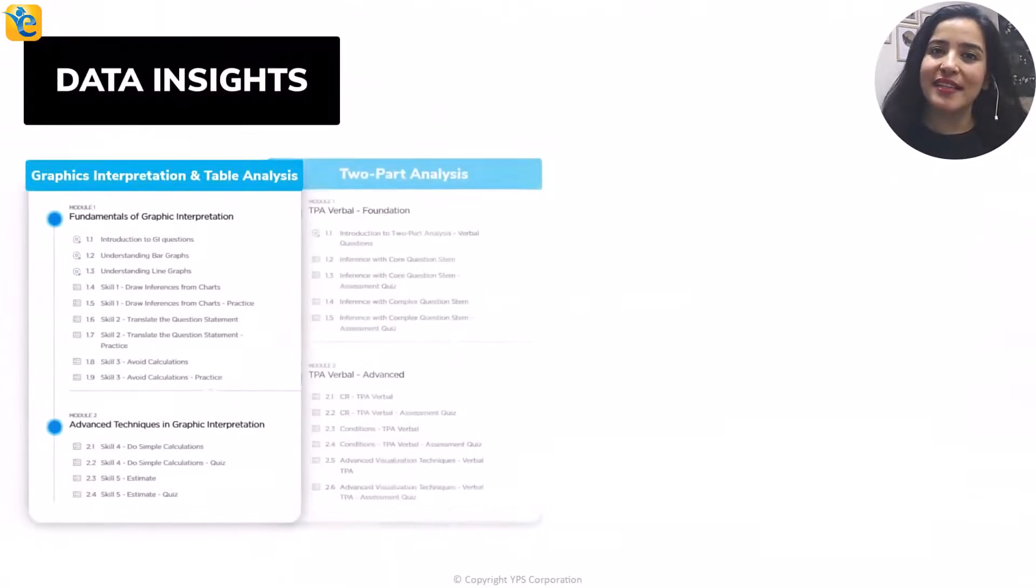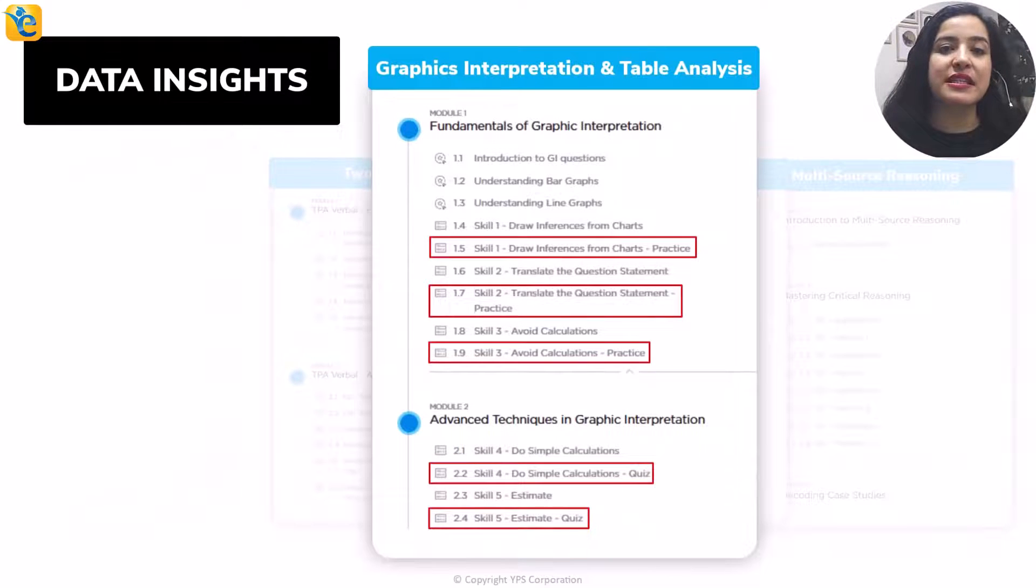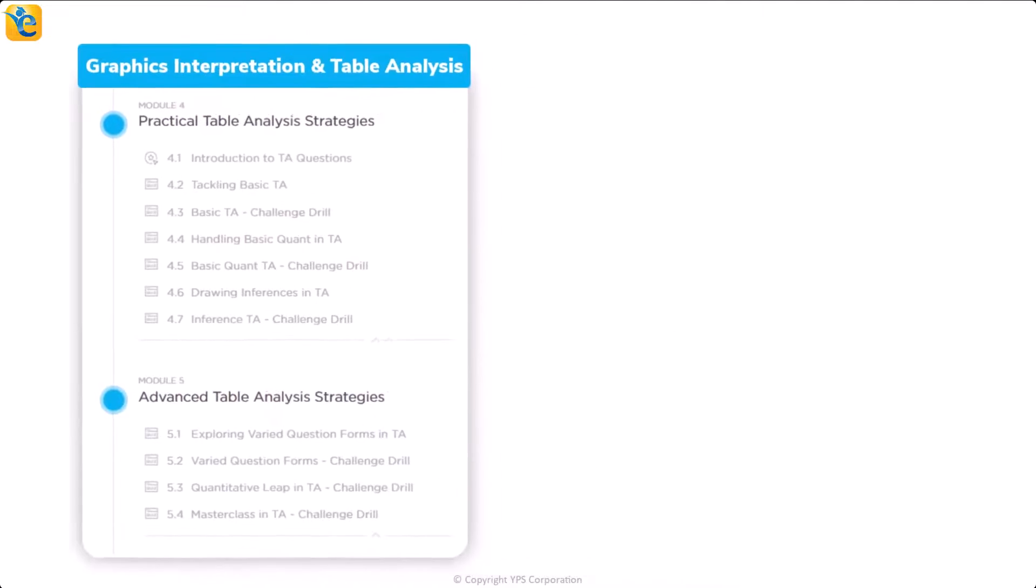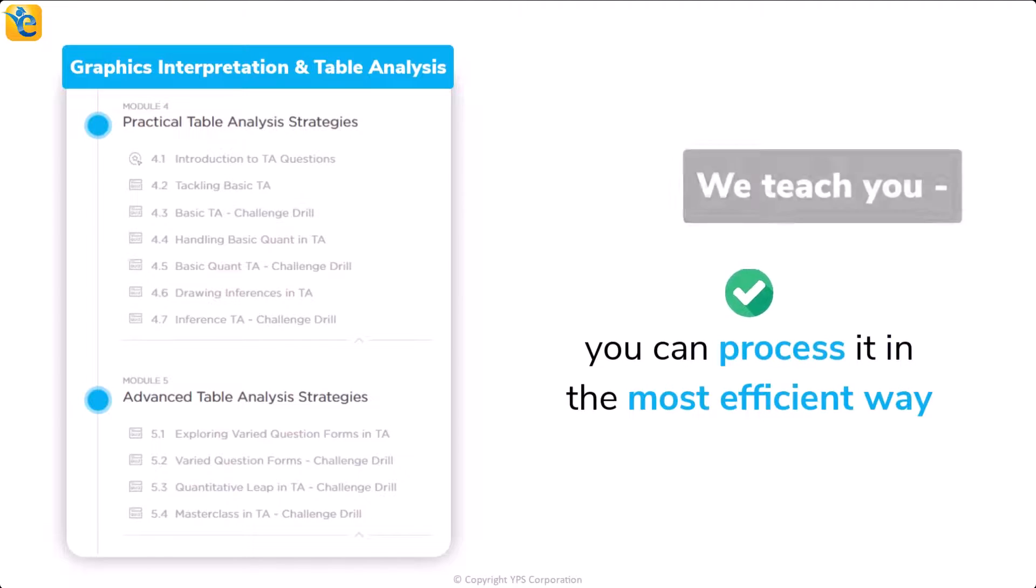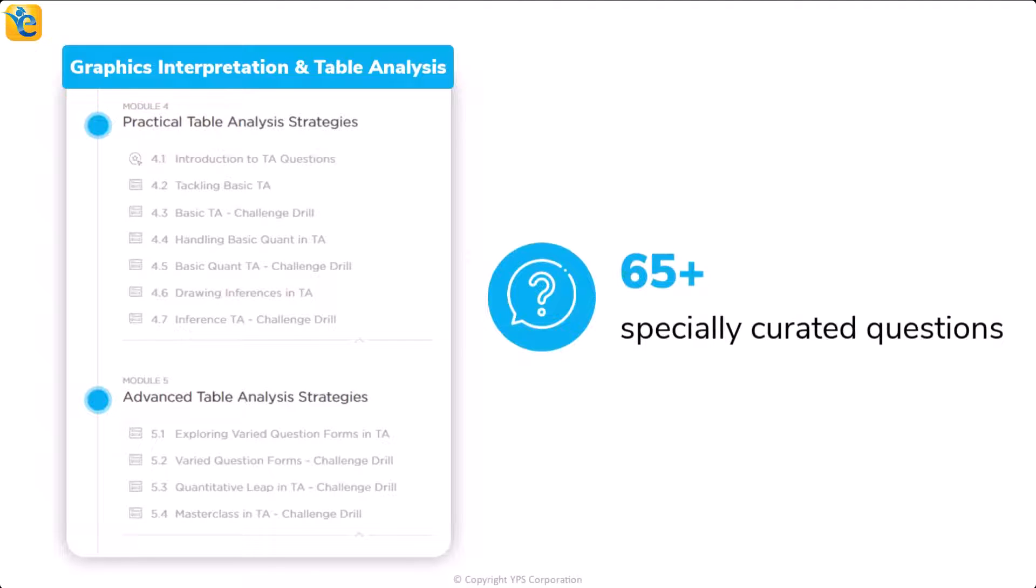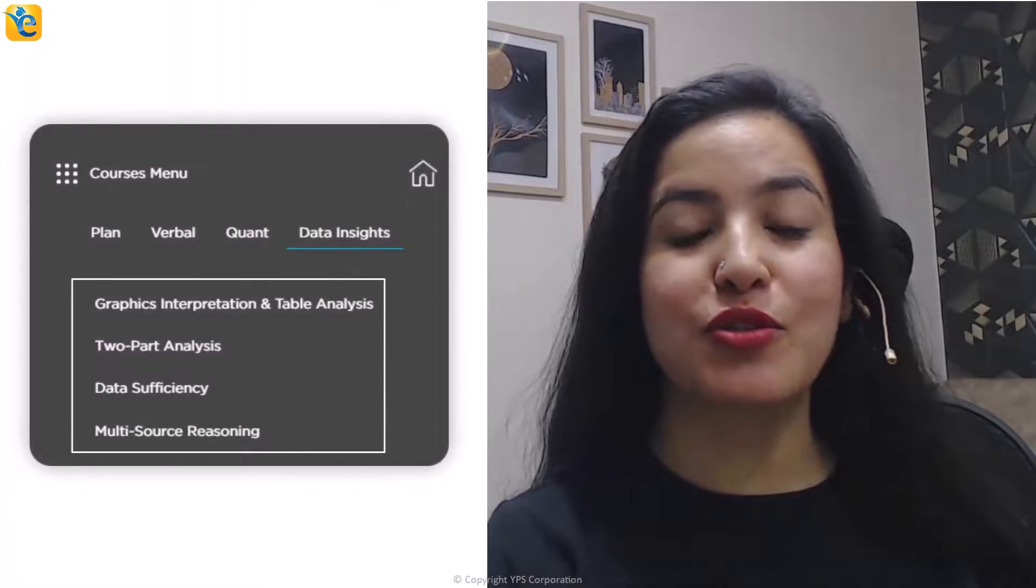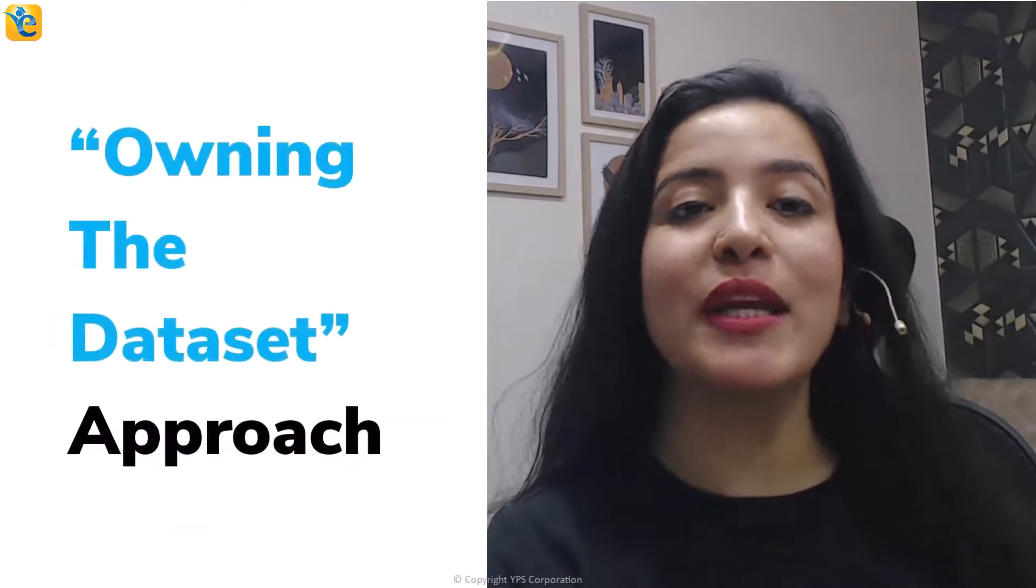Could you have arrived at the approach of solving this question with this level of clarity had you not spent the effort in thoroughly understanding the information presented? Such is the power of the process of owning the data set. And because this skill may not come naturally to many of you, we have created a course architecture that ensures we teach you this skill through every guided quiz in the EGMAT DI course and we reinforce the same in every practice quiz. Throughout the DI course, through around 500 questions, you will learn such process skills so that you can comfortably use the owning the data set approach.